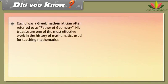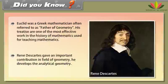Did you know? Euclid was a Greek mathematician often referred to as the father of geometry. His Elements is one of the most influential works in the history of mathematics, used for teaching mathematics. René Descartes gave an important contribution in the field of geometry — he developed analytical geometry.